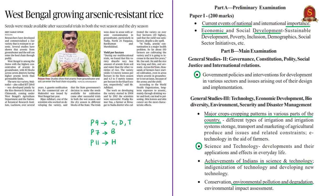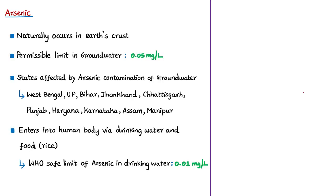This news article is with reference to arsenic-resistant rice. In this analysis we will mainly see why a paddy variety has been developed to resist arsenic. The syllabus relevant for the analysis of this news article is highlighted here for your reference. Now let us see a few important pieces of information about arsenic.